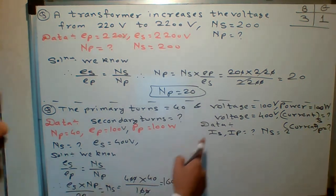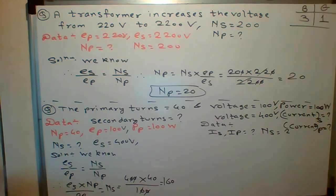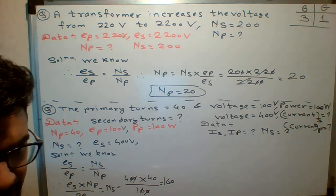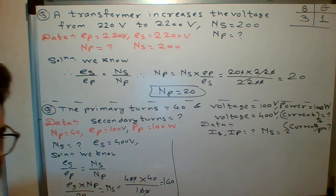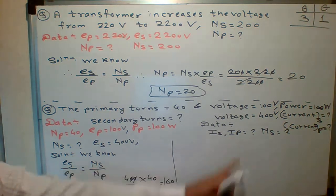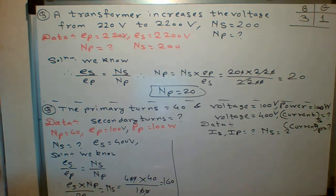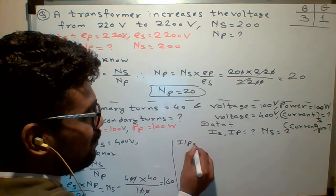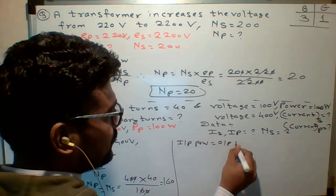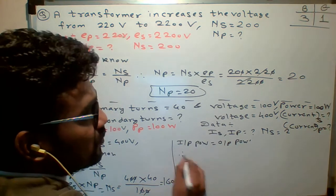Now students. How to find IS and IP. How to find IS. Okay. So students. As I told you. Relation between IS and IP. But students. Here power is given. Input power is equals to output power. Okay. So students. Power at the input side is given. How much it is.